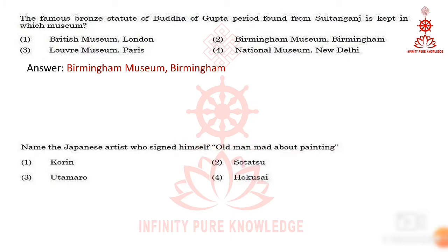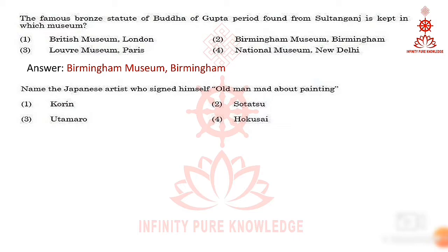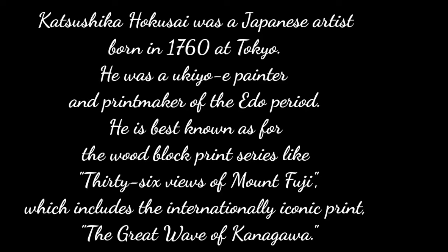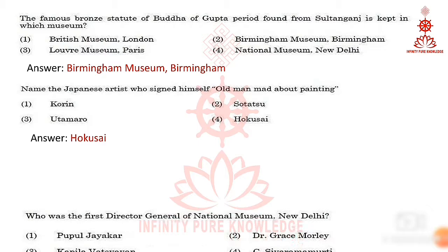Fifth question: name the Japanese artist who signed himself 'old man mad about painting.' The answer is Hokusai. Katsushika Hokusai was a Japanese artist born in 1760 in Tokyo. He was a ukiyo-e painter and printmaker of the Edo period, best known for the woodblock print series like '36 Views of Mount Fuji,' which includes the internationally iconic print 'The Great Wave off Kanagawa.'